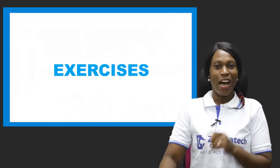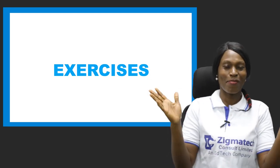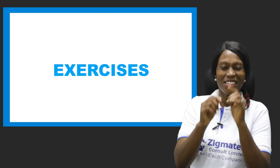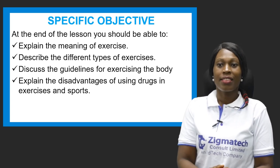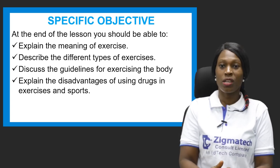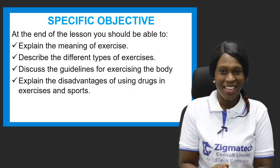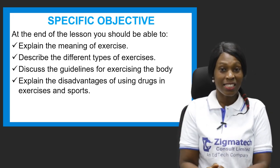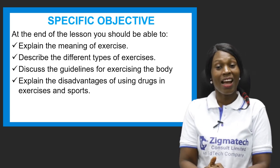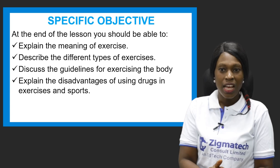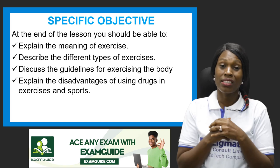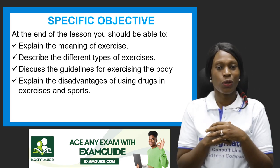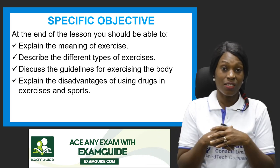Exercise is the topic for today. Now, what do you understand by exercise? But before we proceed, let's look at the lesson objectives. By the end of this lesson, you should be able to explain the meaning of exercise, describe the different types of exercises, discuss the guidelines for exercising the body, and also explain the disadvantages of using drugs in exercise and sports. A lot of people do that, and there are a whole lot of disadvantages.